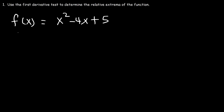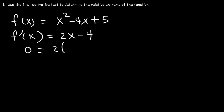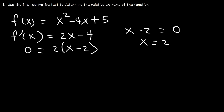The first thing we need to do is find the first derivative. The derivative of x² is 2x, and the derivative of 4x is 4. And for a constant, it's zero. So once you have the first derivative, set it equal to zero. Factoring out a 2, I can see that my critical number is x = 2. If you set the factor x - 2 equal to zero, then x = 2.